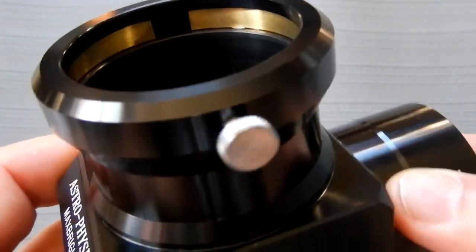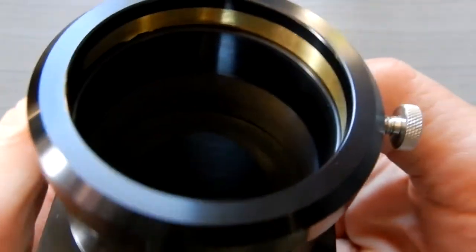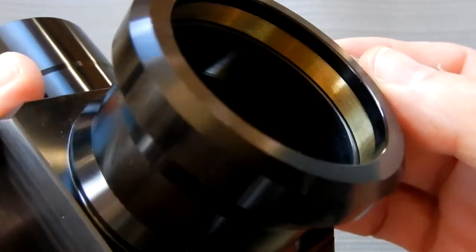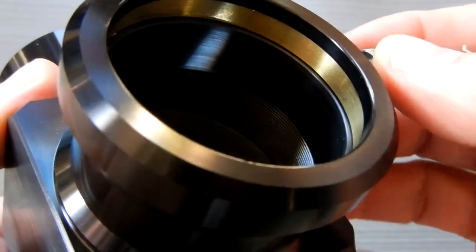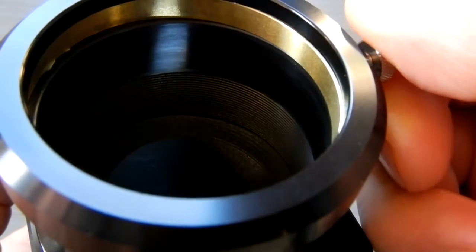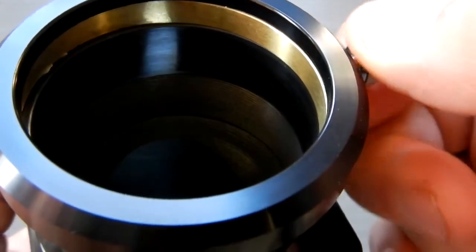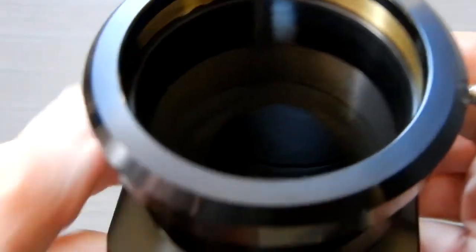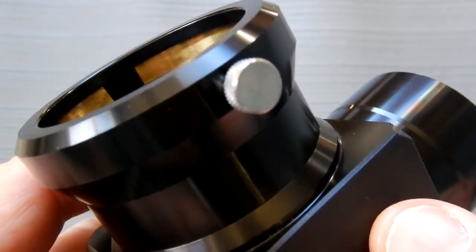And there you see the brass locking ring to capture your eyepieces, camera, whatever accessory you're putting in here, and of course a stainless knurled thumb screw.